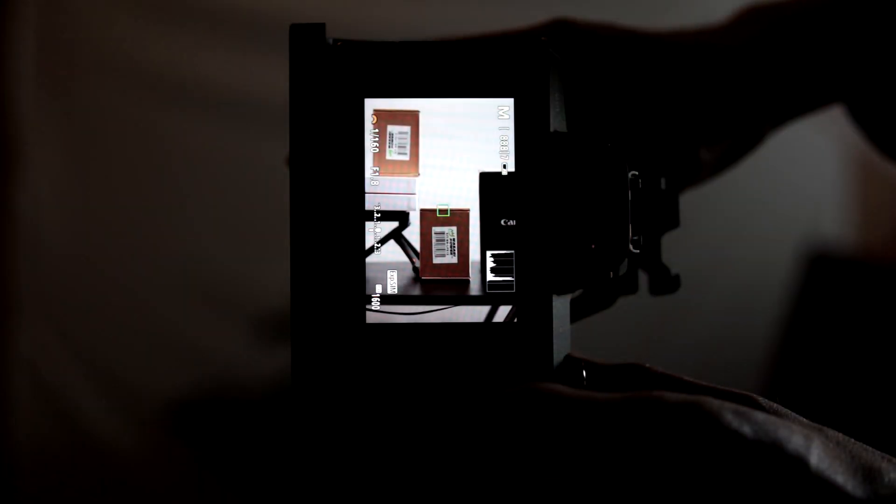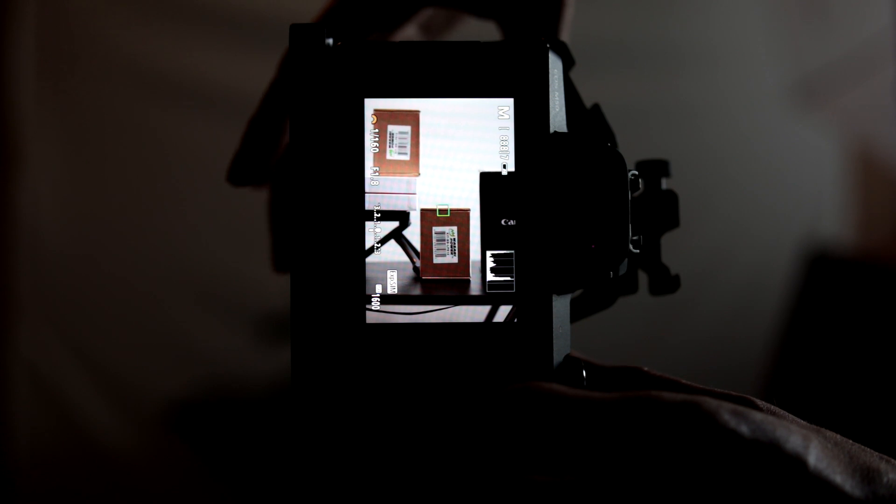But if changing your focus point or slightly adjusting your composition isn't something you want to do, and actually your composition itself isn't a big issue, you can flip your camera vertically. And then the dual pixel autofocus system will be basically fully flipped as well. And then you'll be able to focus on those horizontal lines. But of course they won't be horizontal lines when you adjusted your camera. That gives you an option to get that focus exactly where you want when composition isn't really necessarily an issue.